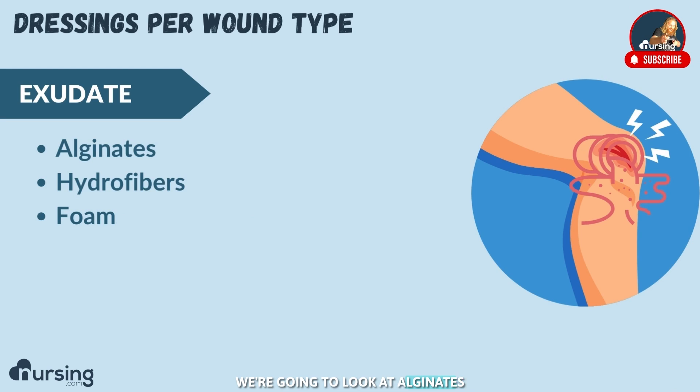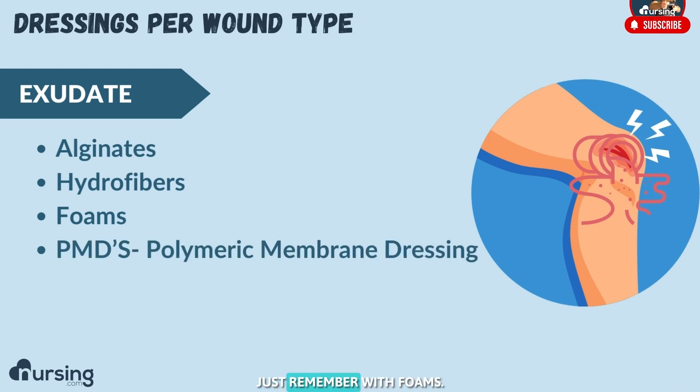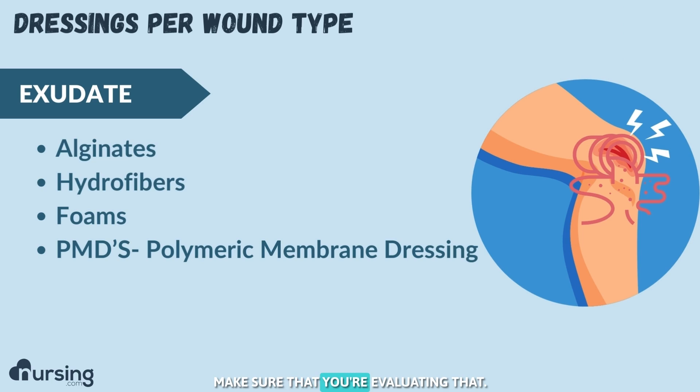For wounds with lots of drainage, we're going to look at alginates, hydrofibers, foams, and PMDs. Just remember with foams, sometimes they may not be appropriate, so make sure you're evaluating that.